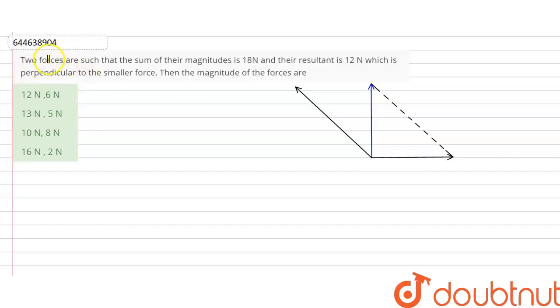Hello students, welcome to Doubtnut. Our question is: two forces are such that sum of their magnitude is 18 Newton and resultant is 12 Newton which is perpendicular to the smaller force. Then the magnitude of the forces are...